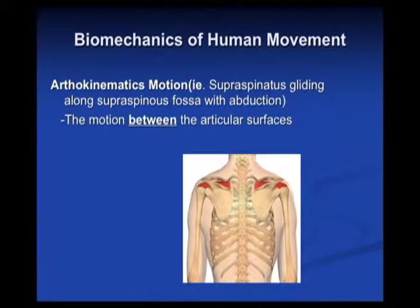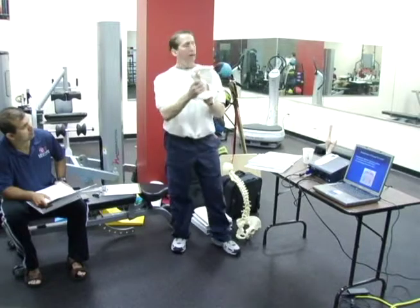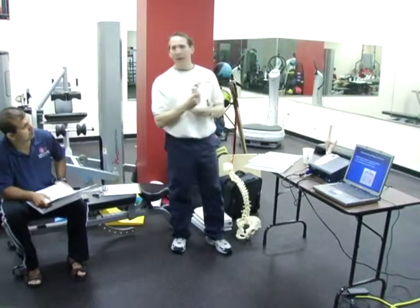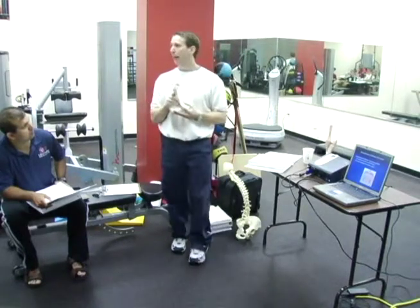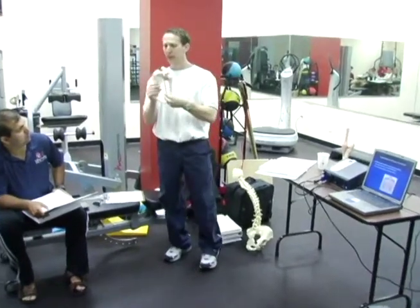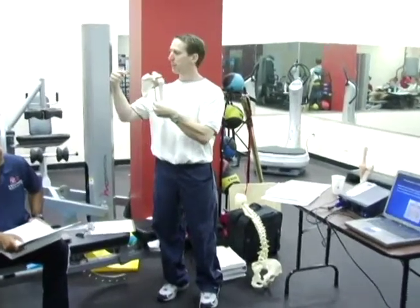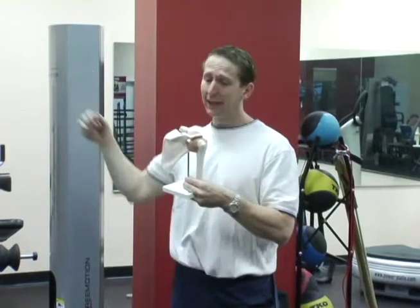We look at arthrokinematic motion — what that means is the motion between articular surfaces. Looking at Mr. Scapula here, the shoulder, highlighted in red, that is supraspinatus. As you all know, supraspinatus runs from the supraspinous fossa to the greater tubercle. It performs abduction and is innervated by the suprascapular nerve.